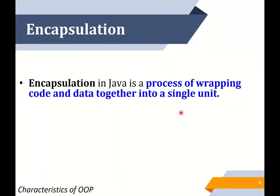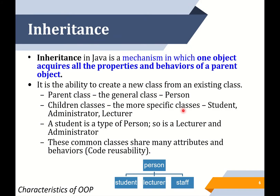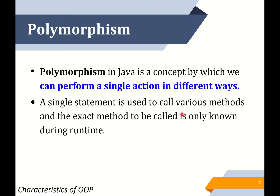But you don't know the internal processing about the message delivery. Next, encapsulation — it is a process of wrapping code and data together into a single unit. Third, inheritance — it is a mechanism in which one object acquires all the properties and behavior of a parent object; it is the ability to create a new class from an existing class. We have parent class and children class. Polymorphism is a concept by which we can perform a single action in different ways. A single statement is used to call various methods and the exact method to be called is only known during runtime. That's all the four characteristics of OOP.